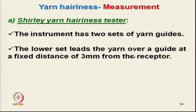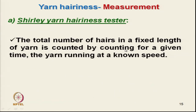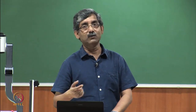The lower set leads the yarn over a guide at a fixed distance of 3 millimeters from the receptor. The upper set has a movable guide at different distances from the receptor, between 1 millimeter and 10 millimeters. The total number of hairs in a fixed length of yarn — say 100 meters — is counted. By knowing the testing speed and count time, we can calculate the number of hairs per unit length.